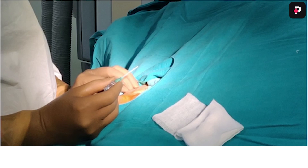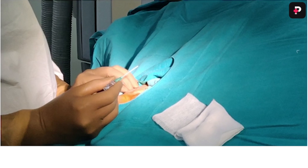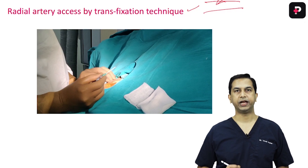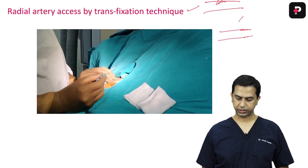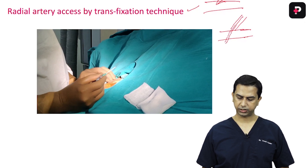This technique is called the transfixation technique. You puncture the anterior wall of the artery — different from what we did in the femoral artery where our target was to puncture just the anterior wall. In this transfixation technique, you fix the artery by puncturing it with the needle and covered sheath, going deep to also puncture the posterior wall.